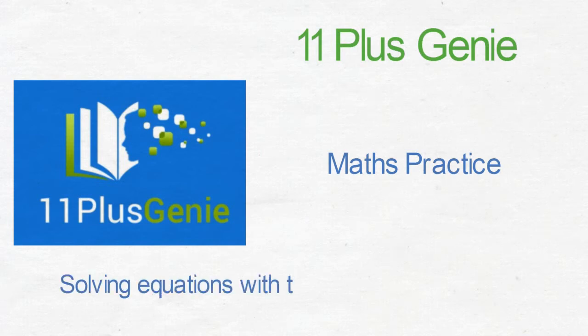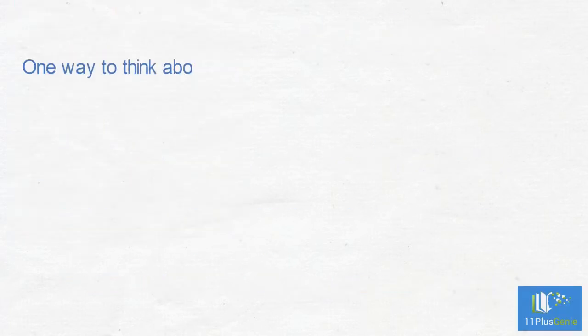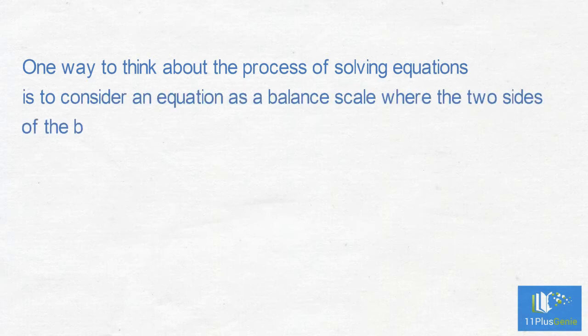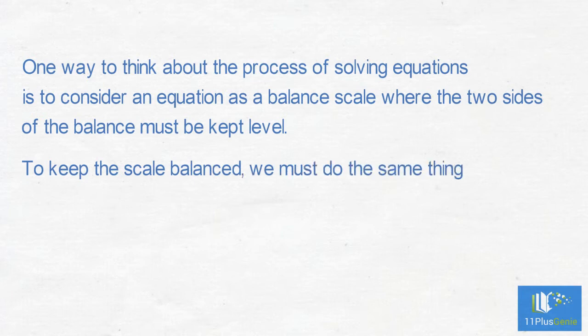Solving equations with the unknown on both sides. One way to think about the process of solving equations is to consider an equation as a balanced scale where the two sides of the balance must be kept level. To keep the scale balanced we must do the same thing on both sides of the scale.